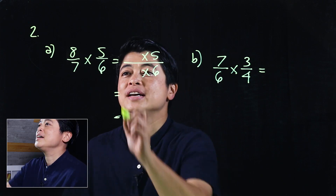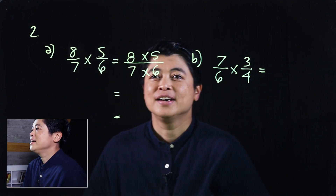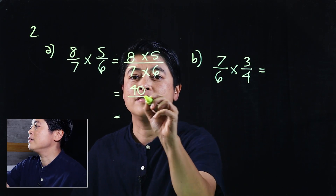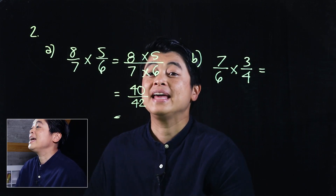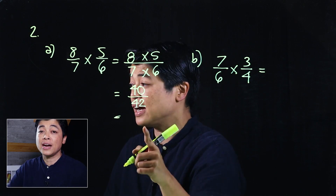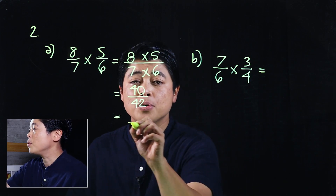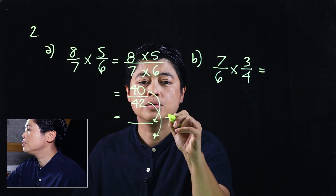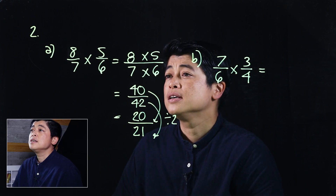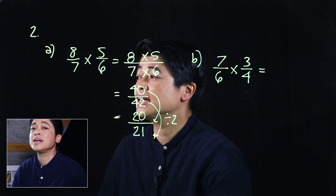In Method 1, we put this as 8 and this as 7, then multiply, giving us 40 over 42. To put it in simplest form we need to divide both the numerator and denominator by something — in this case both can be divided by 2, giving us 20 over 21.